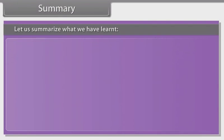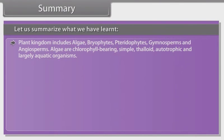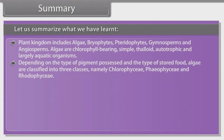Summary. Let us summarize what we have learned. Plant kingdom includes algae, bryophytes, pteridophytes, gymnosperms and angiosperms. Algae are chlorophyll-bearing, simple, thalloid, autotrophic and largely aquatic organisms. Depending on the type of pigment possessed and the type of stored food, algae are classified into three classes, namely Chlorophyceae, Phaeophyceae and Rhodophyceae.